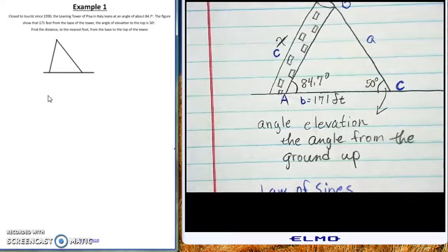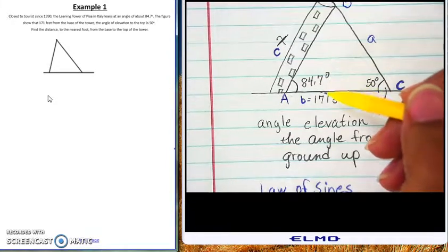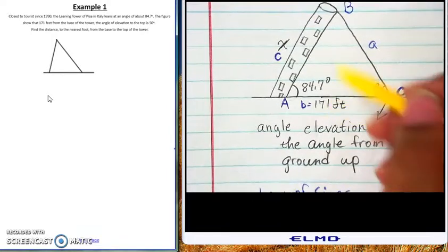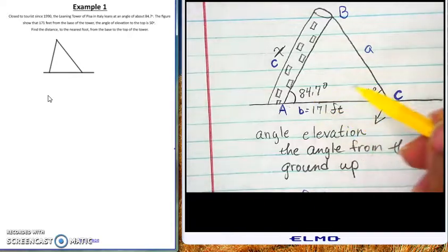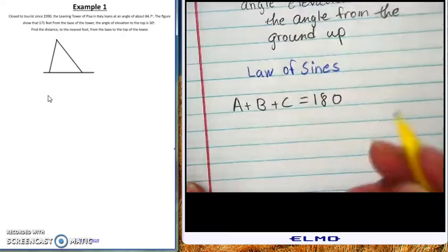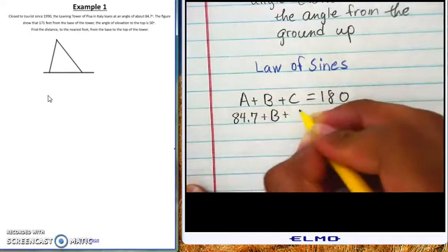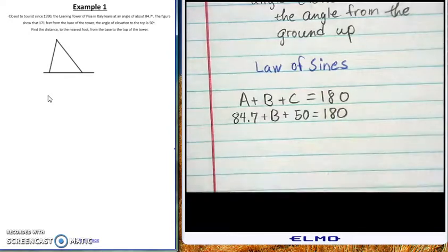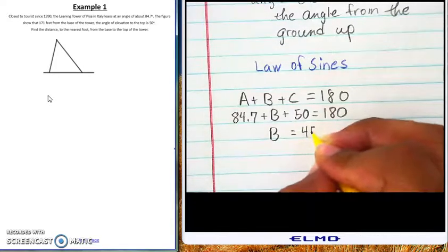None of those letters match each other directly, so we need to find the third angle first — just like in that Law of Sines example. We have two angles so we can figure out angle B. So: A + B + C = 180. Filling in: 84.7 + B + 50 = 180. Adding them together and subtracting from 180, we get that B is equal to 45.3 degrees.